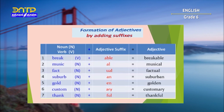Now let us look at a summary of adjectives formed by adding suffixes: break + able = breakable; music + al = musical; fact + ual = factual; suburb + an = suburban; gold + en = golden; custom + ary = customary; thank + ful = thankful.